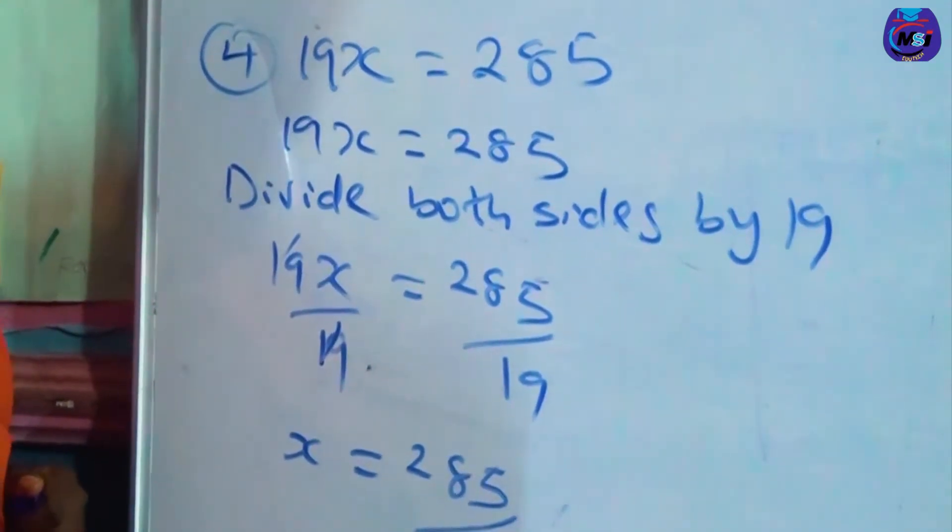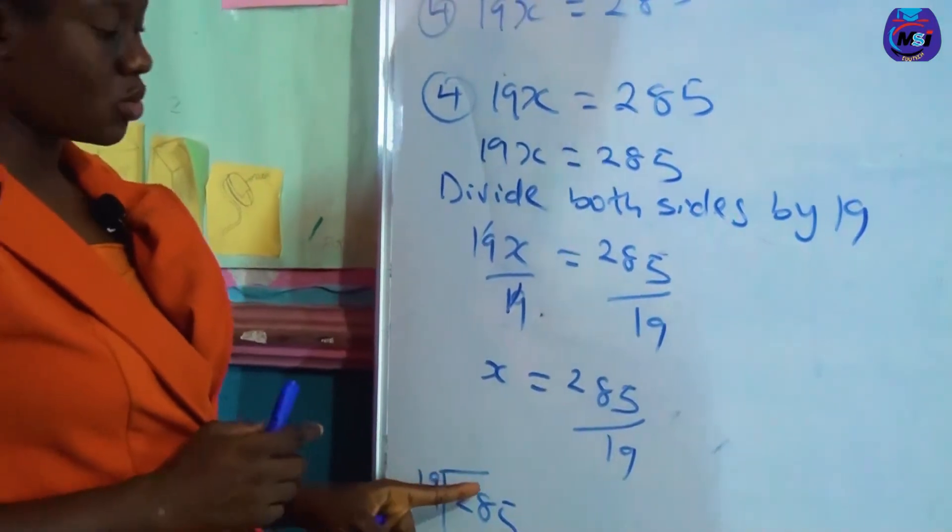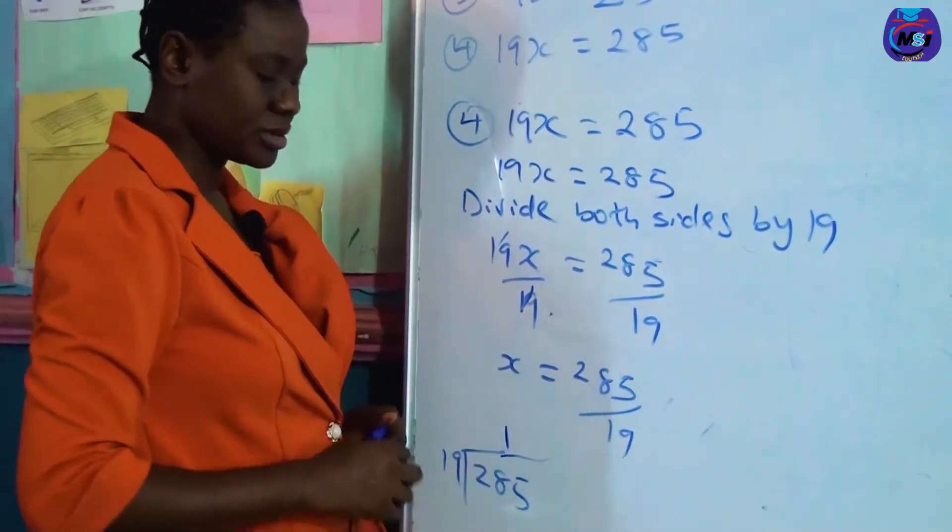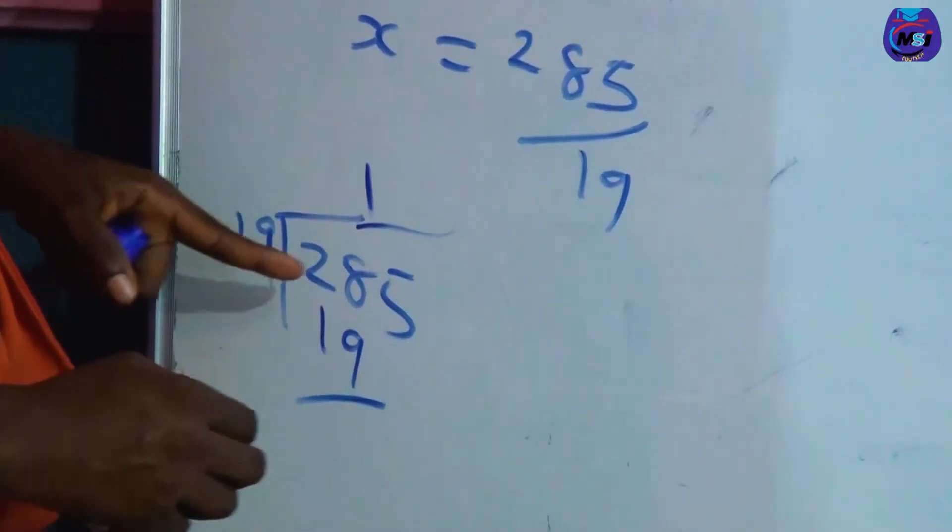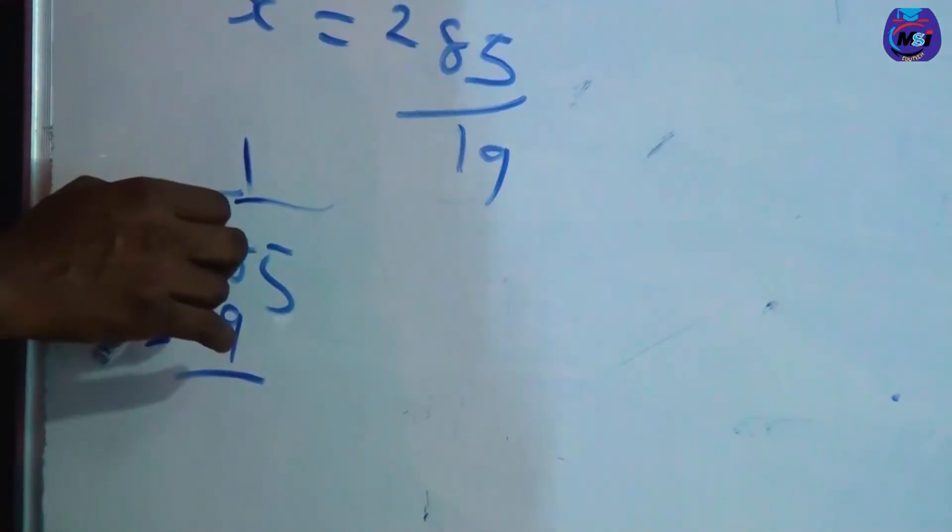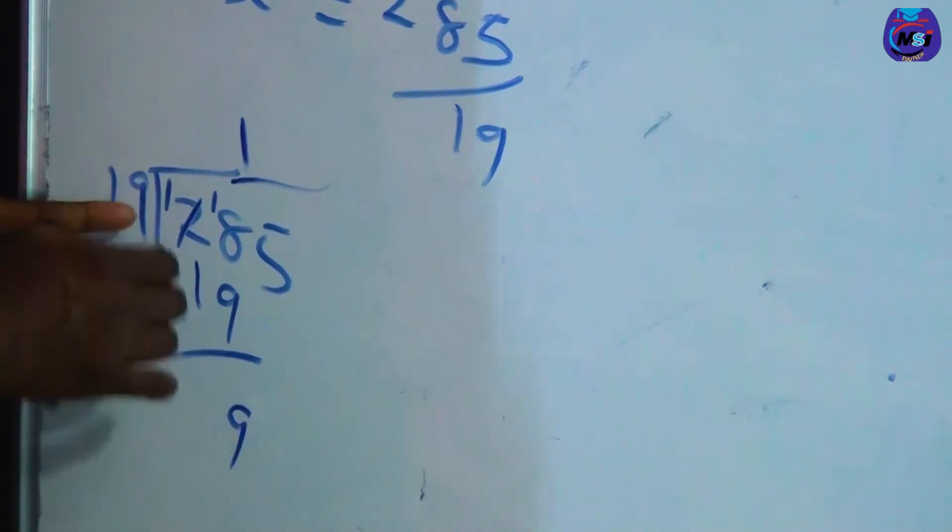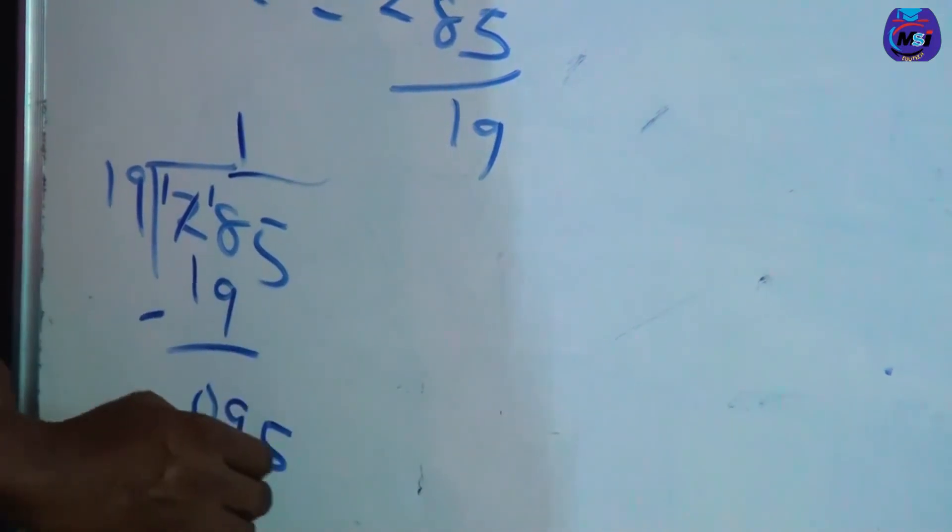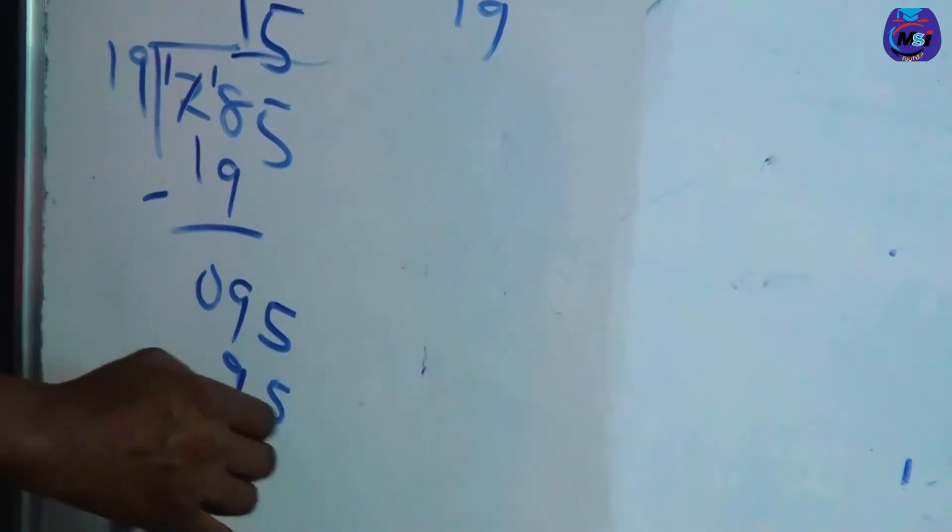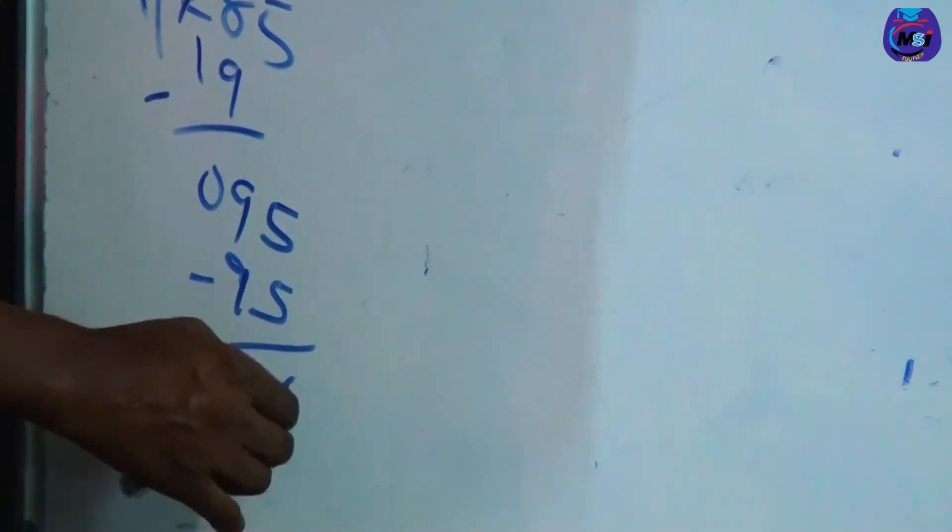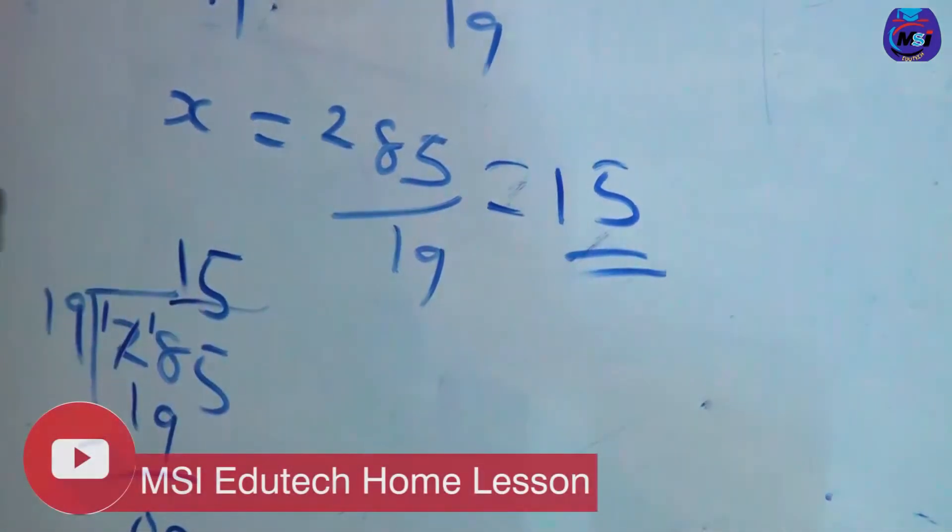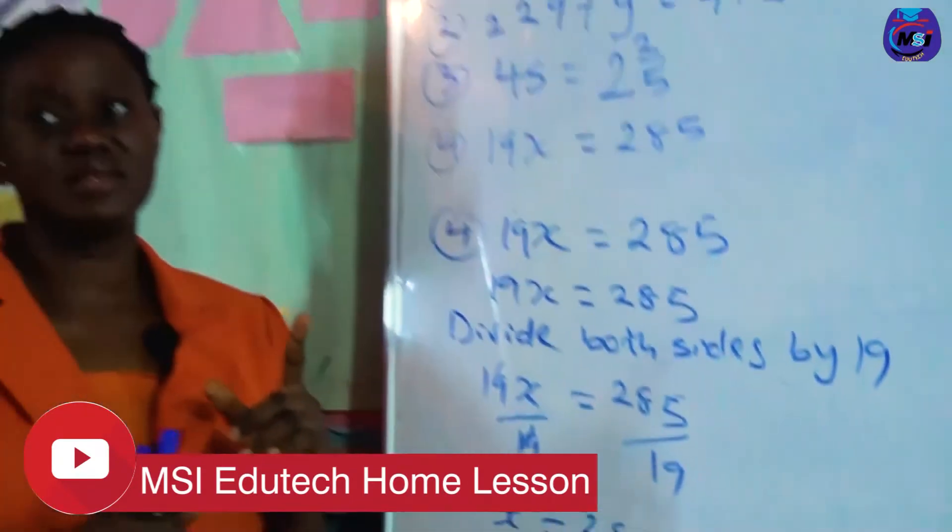285 divided by 19. How many 19 can we get in 2? None. How many 19 can we get in 28? 1. So I place a 1 above 8. 19 times 1 is 19. I need to subtract 19 from 28. 8 take away 9, I need to borrow, remain 1 here, and then I have 18. 18 take away 9 is 9, 1 take away 1 is 0. Now I bring down 5, becoming 95. How many 19 can I get in 95? It's 5. So 19 times 5 is 95, 95 take away 95 is 0. So 285 divided by 19 is 15. Our final answer is 15.